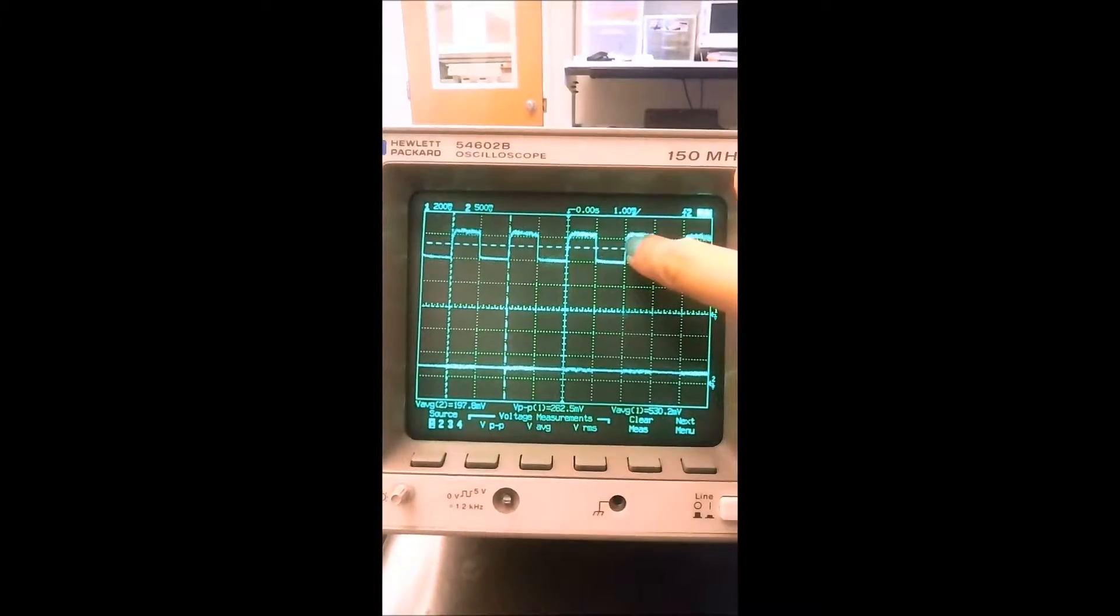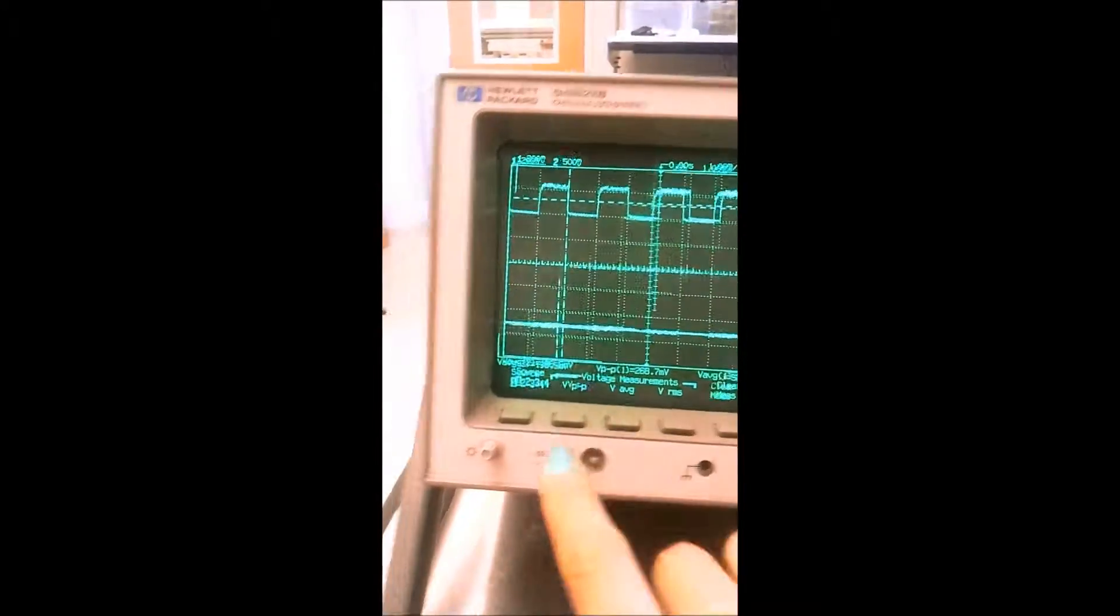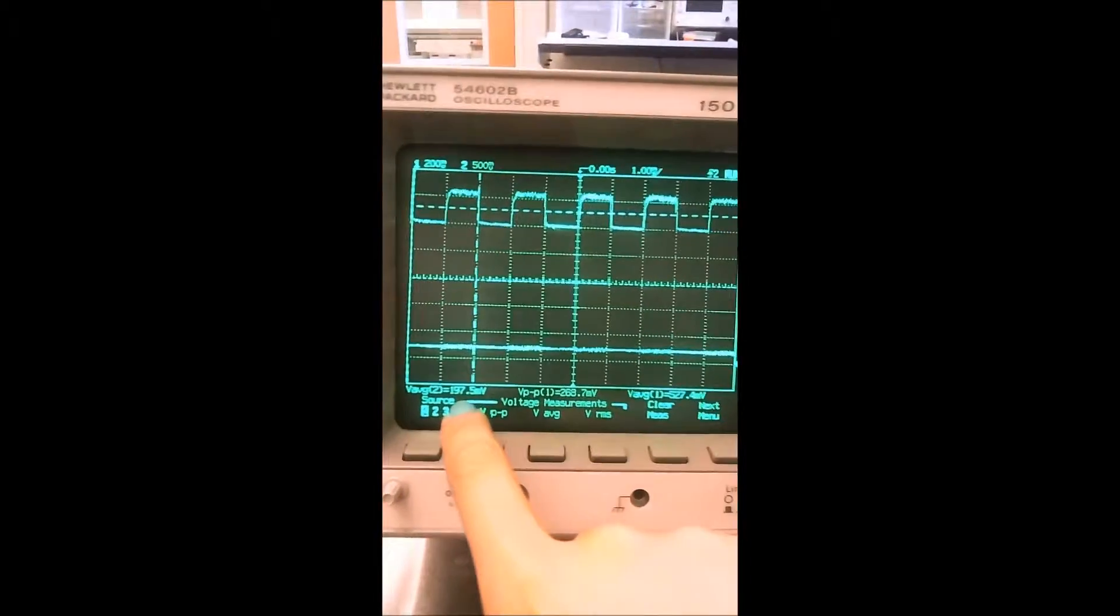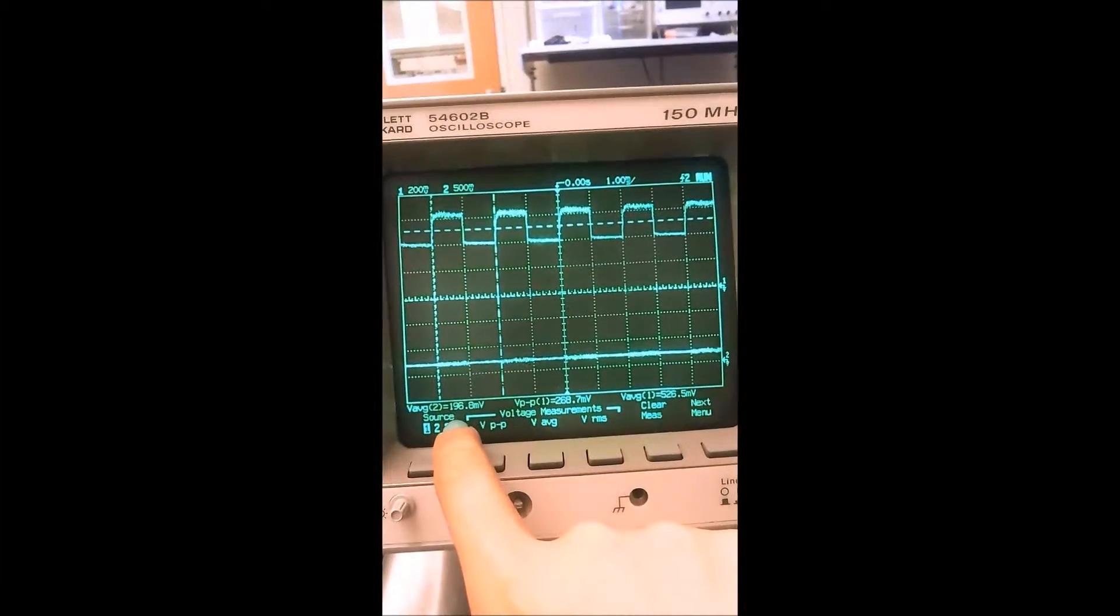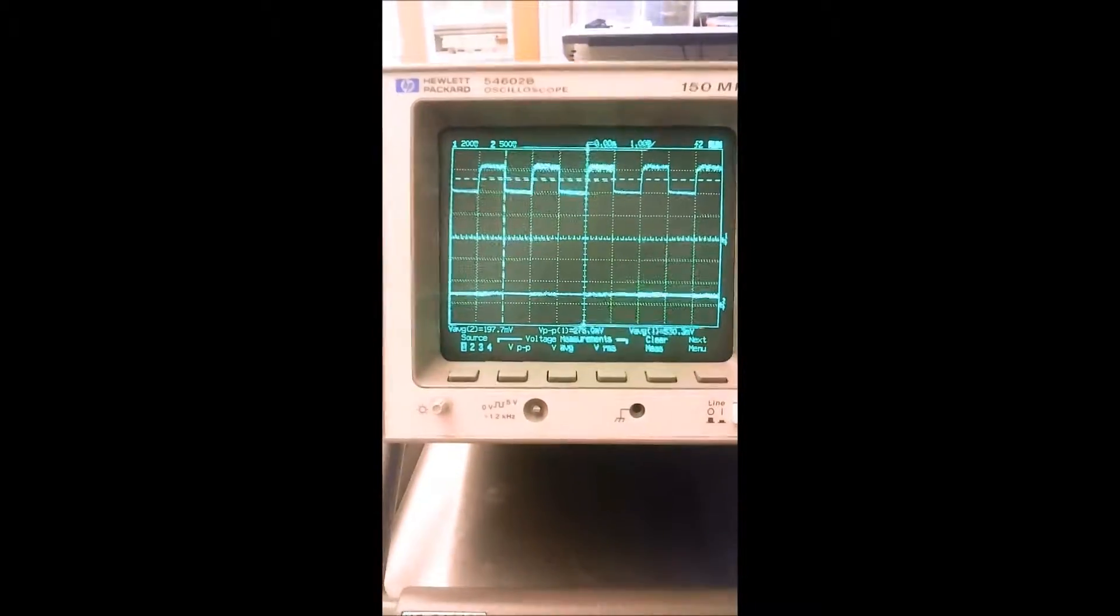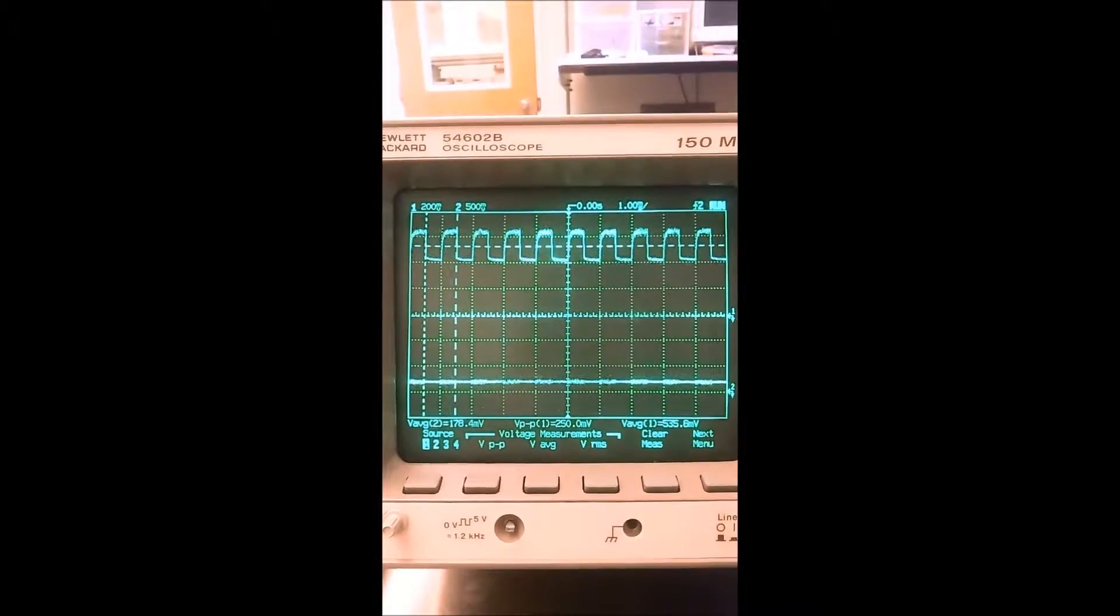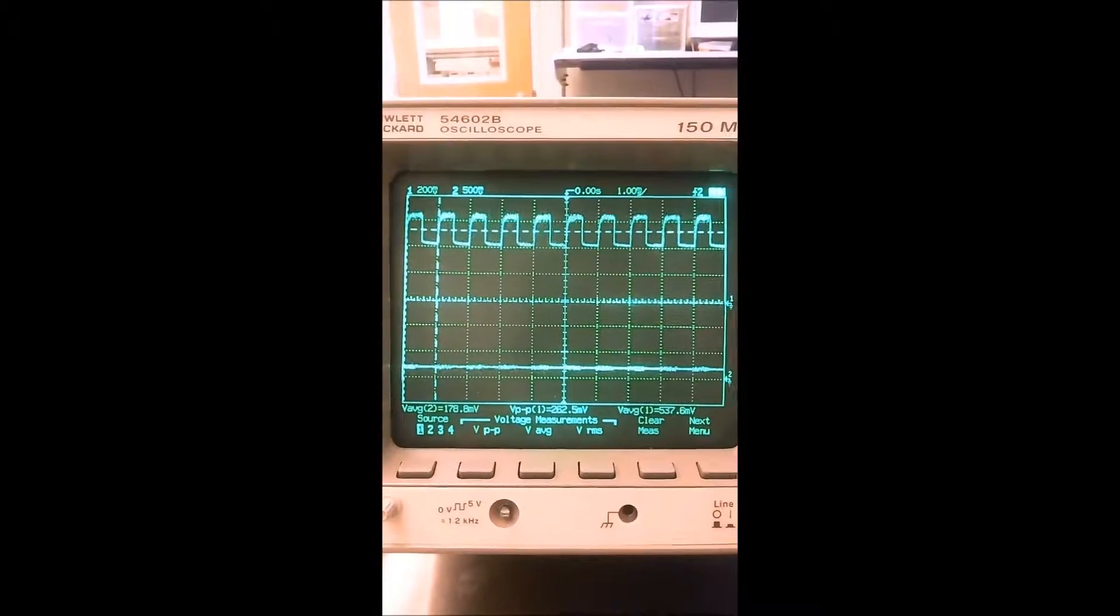So that changes the DC signal coming out of the low-pass filter. Let's go up further. 1k seems fine.